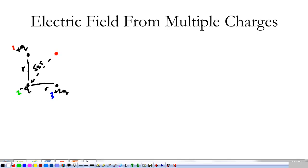We're going to look at the individual electric field from each charge and then how we might add them together. Charge 1 is positive, so at this point the electric field points away from it. That's E1, and E1 is going to be equal to k times q over r squared, since it's a distance of r away.